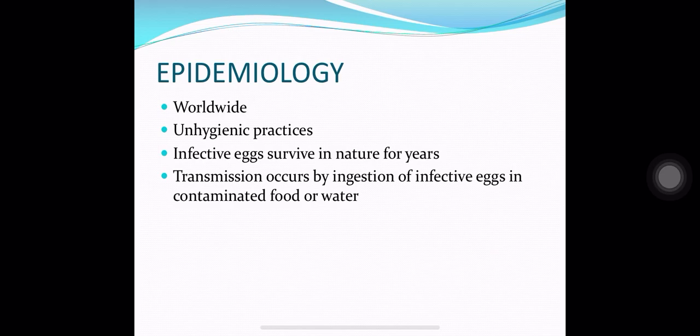Regarding the epidemiology of Round Worm, it has a worldwide distribution, associated with unhygienic practices. Infective eggs can survive in nature for many years. Transmission occurs by ingestion of infective eggs in contaminated food and water.